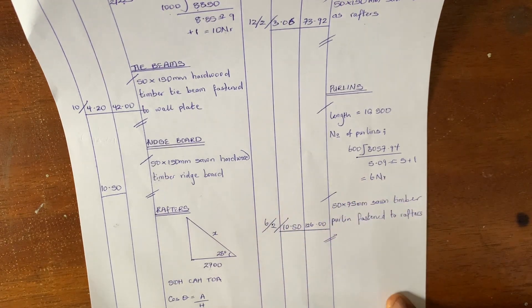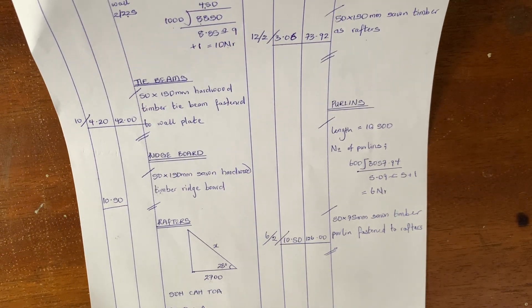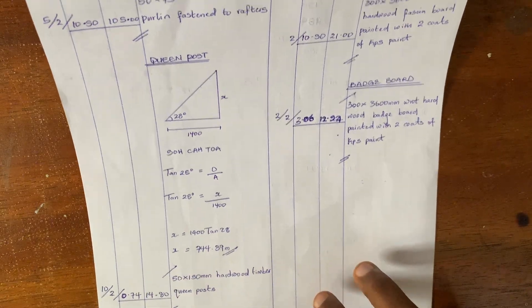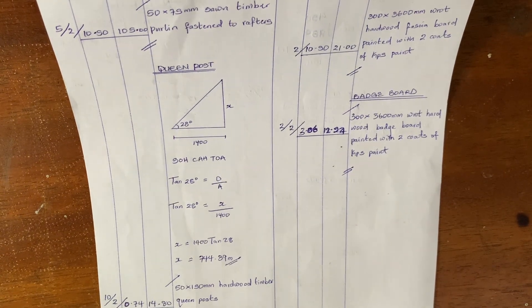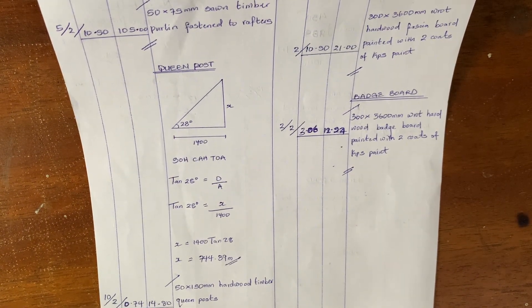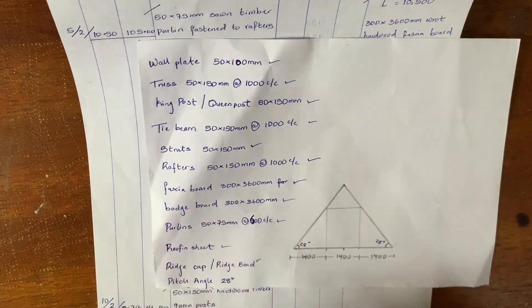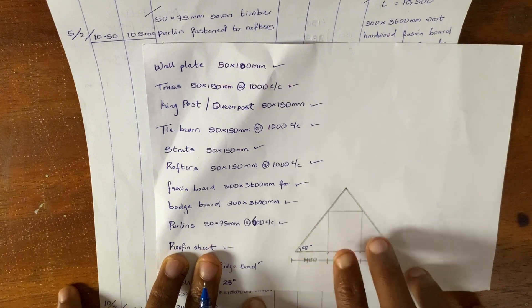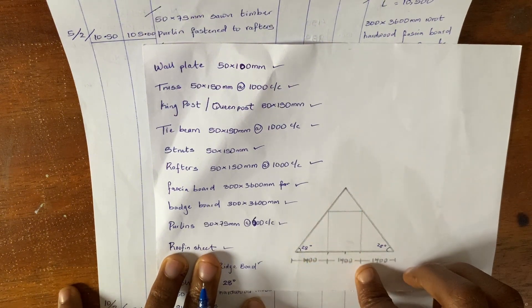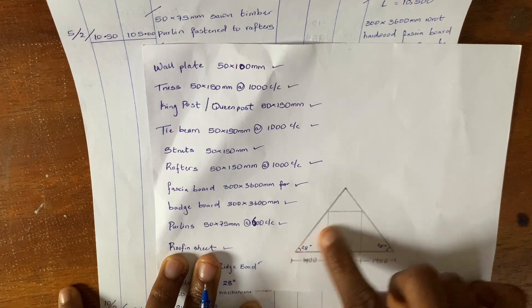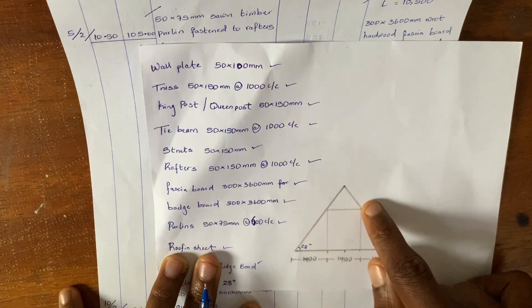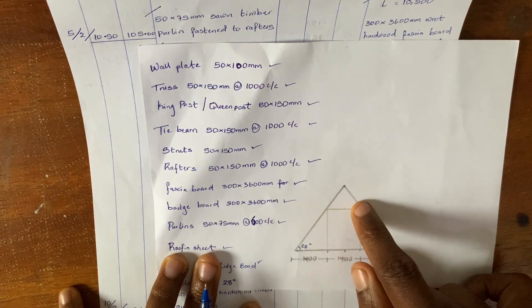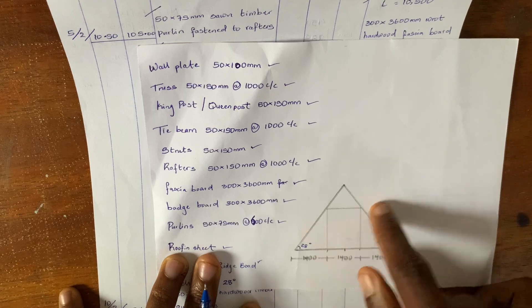So doing that we measure for our purlins. Next we are going to be measuring our queen post. Like I said in the previous video, the nature or design of your truss can change. If you look at this truss design, we do not have a vertical king post; however, we have two queen posts. So the design has changed and we are going to be calculating for the measurement of our queen post.